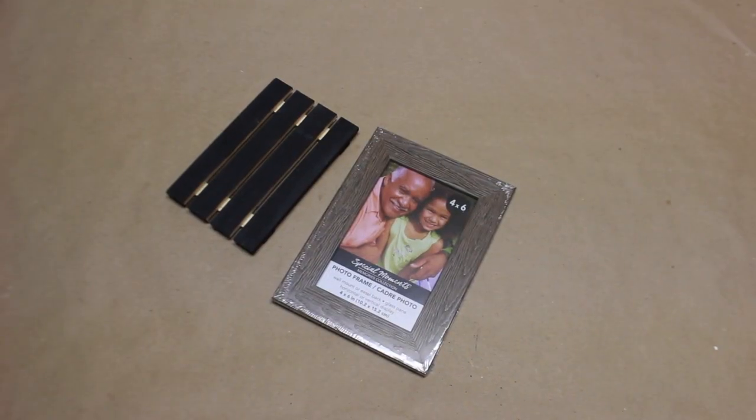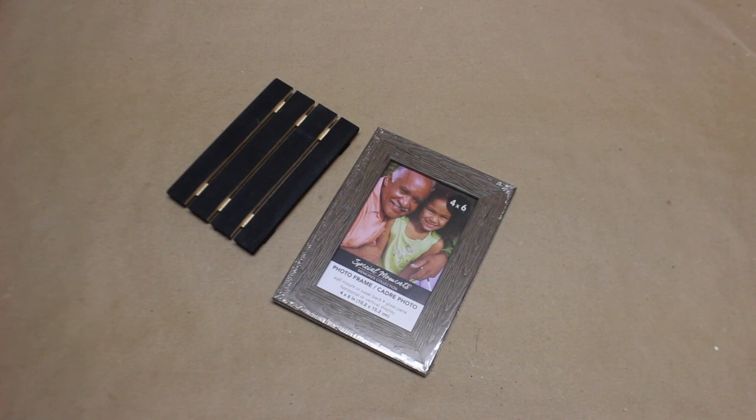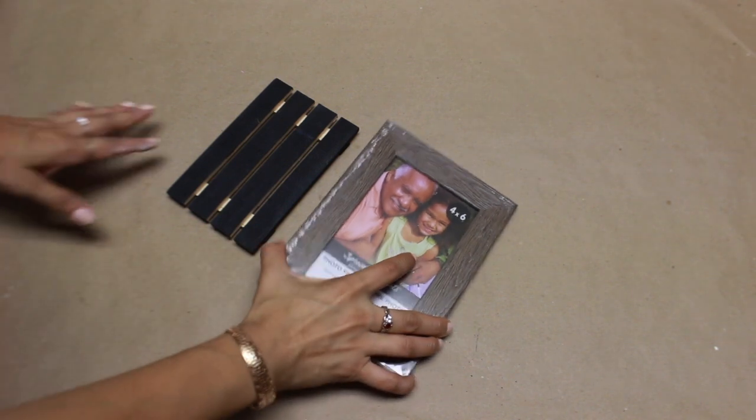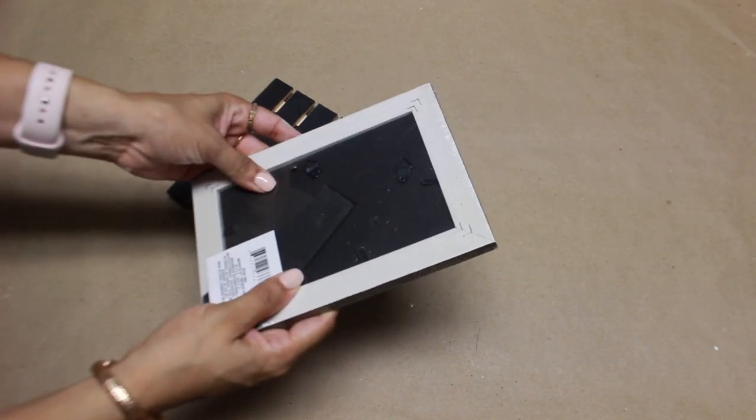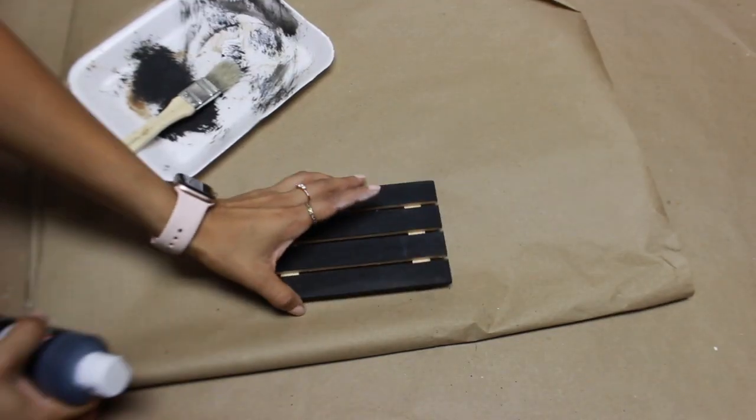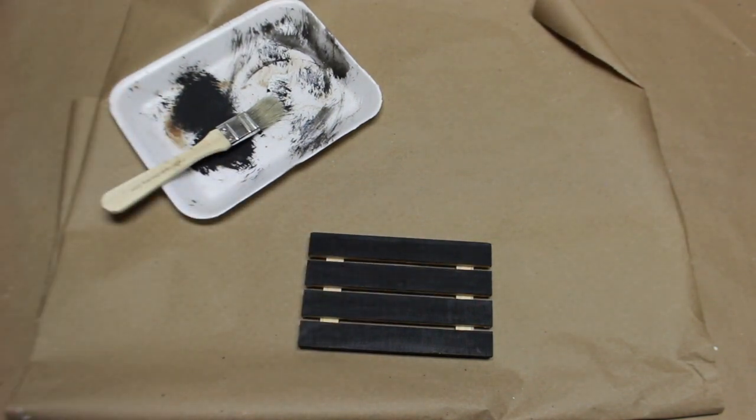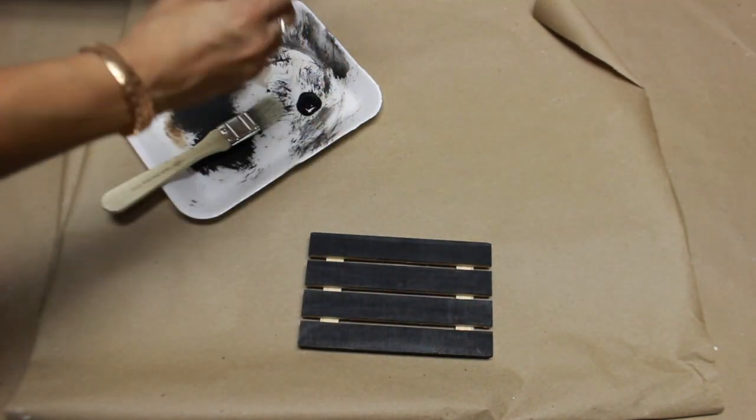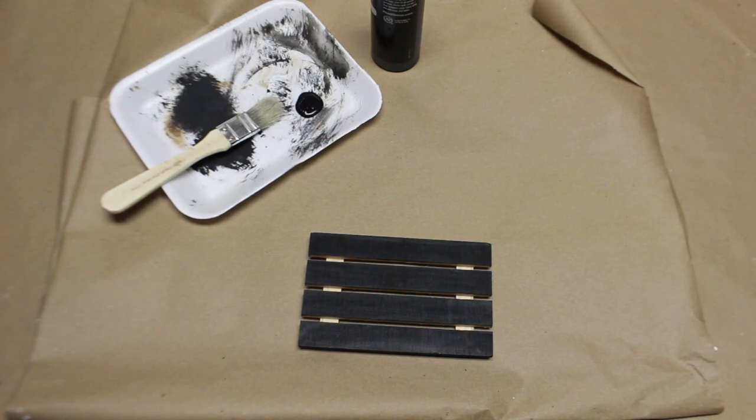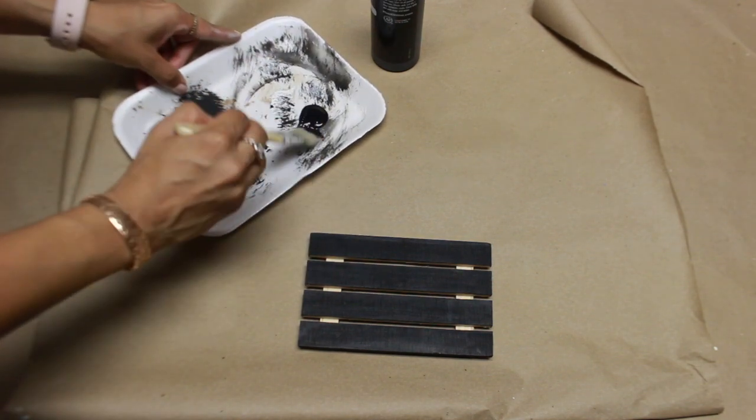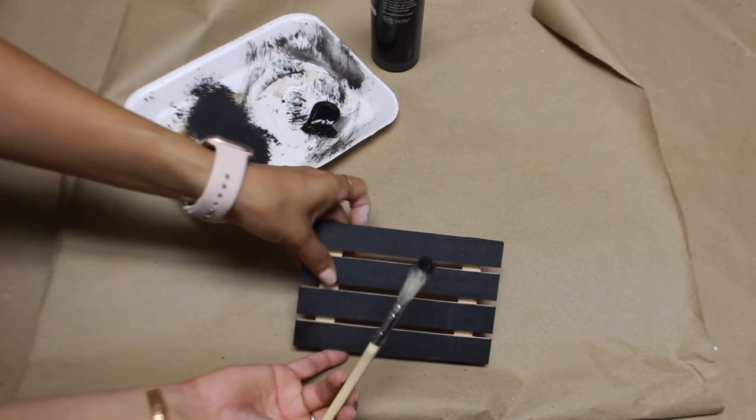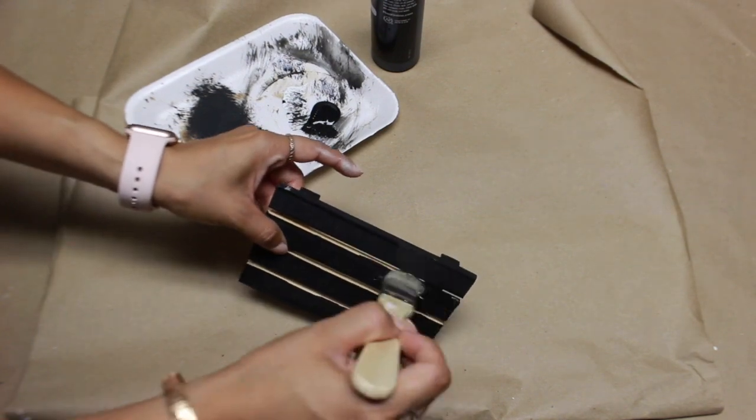All right, DIY number two. This next one is also very simple. I'm actually using four Dollar Tree items. I'm going to use two of these four by six frames and two of these palettes. So I actually have used this palette before in a previous older DIY. And as you can see, I did paint most of it black already. I'm just going to finish painting all of it black, get in between those lines right there.